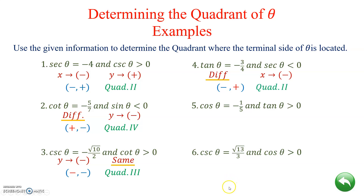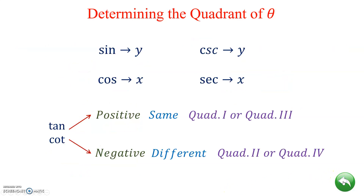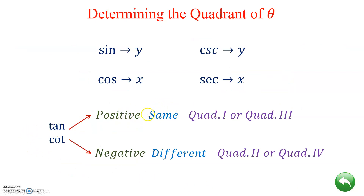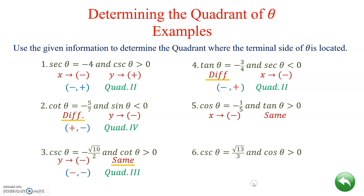Example 5: Cosine is associated with x, and here x is negative. Tangent of theta is greater than zero, so tangent is positive — the signs are the same. Creating the ordered pair: x is definitely negative, and the second coordinate is the same as negative, so it's also negative. Negative/negative puts us in quadrant 3.